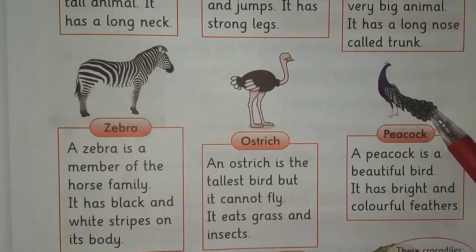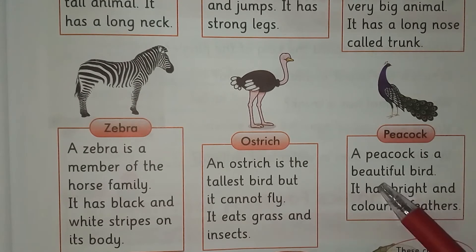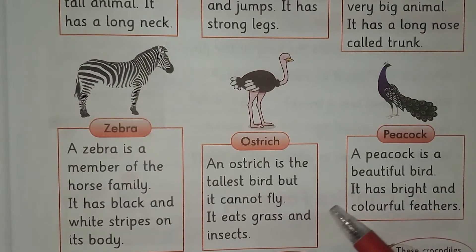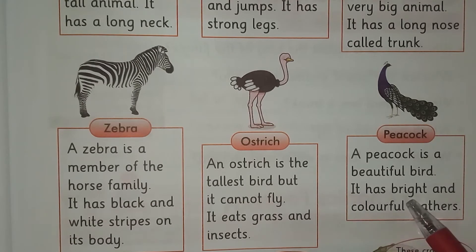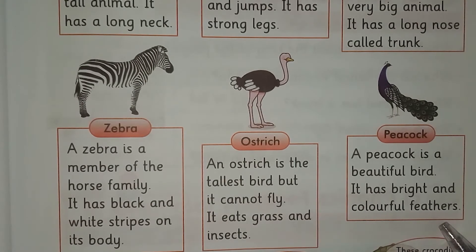Peacock. Mawr. A peacock is a beautiful bird. Mawr ek khubsoorat parinda hai. It has bright and colorful feathers. Iske roshan aur rangeen pankh hain.